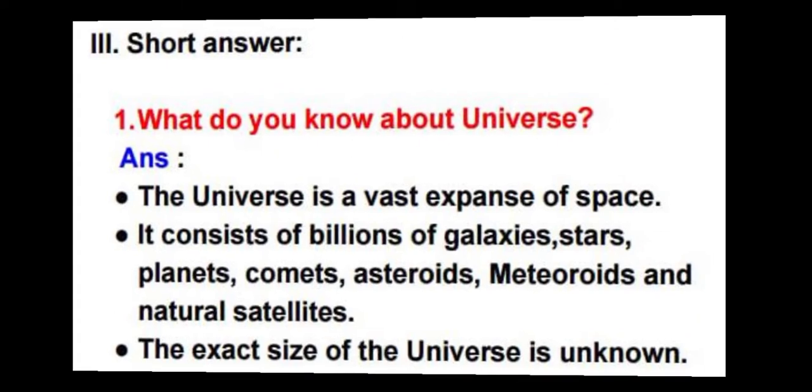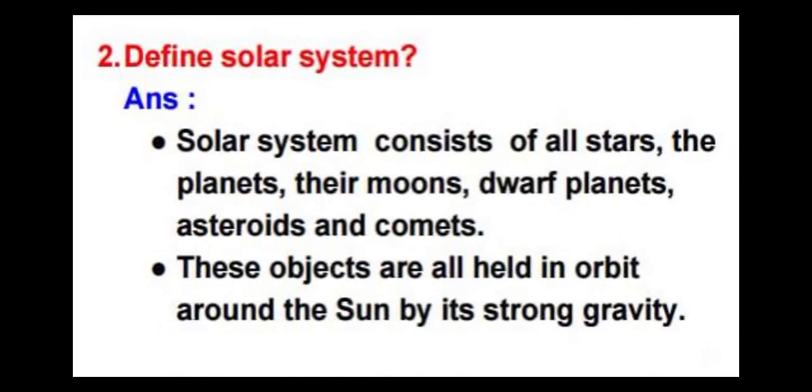The second question: define solar system. Answer is solar system consists of all stars, the planets, their moons, dwarf planets, asteroids and comets. These objects are all held in orbit around the sun by its strong gravity.